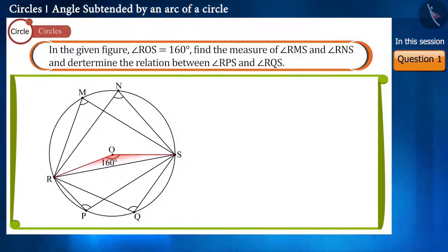In the given figure, the value of angle ROS is 160 degrees. Find the measure of angle RMS and angle RNS, and determine the relation between angle RPS and angle RQS.